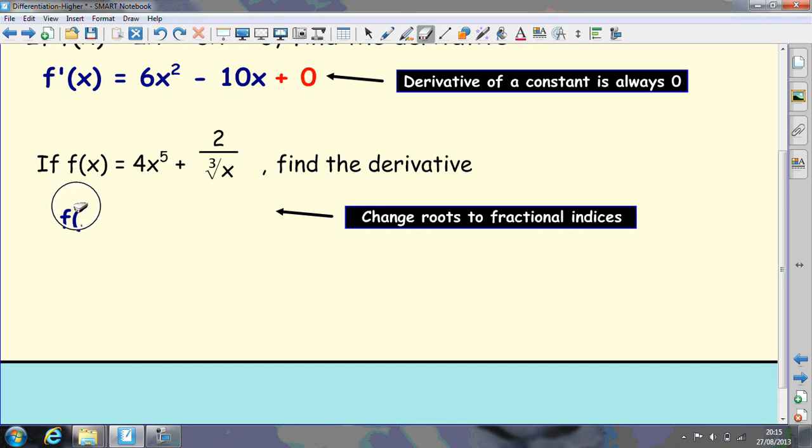So rewrite that first. We haven't differentiated at this point, we're just rewriting it in a form we can differentiate. So we should have learned that the cube root of x is x to the third and then take it up the top to be a negative. Now we can differentiate.